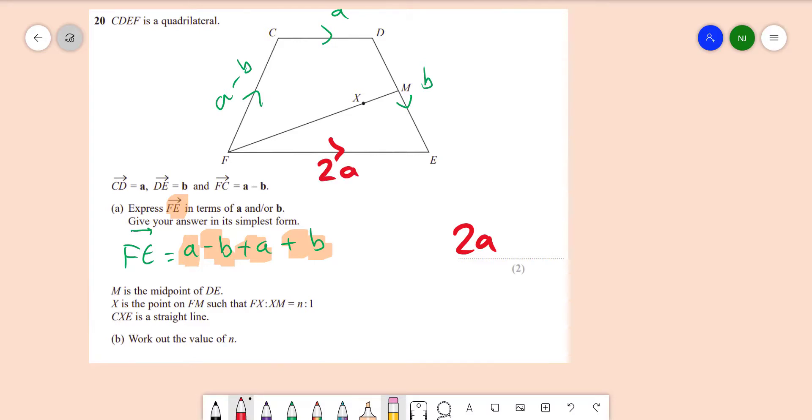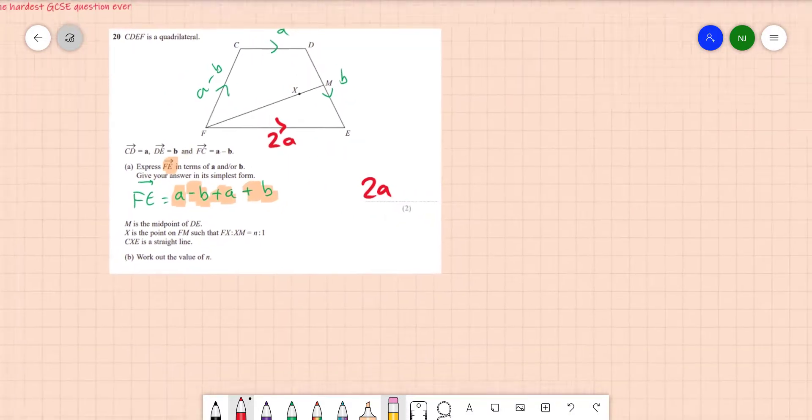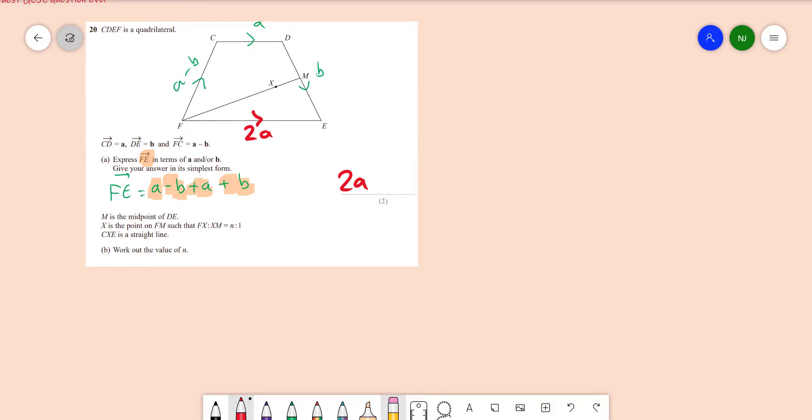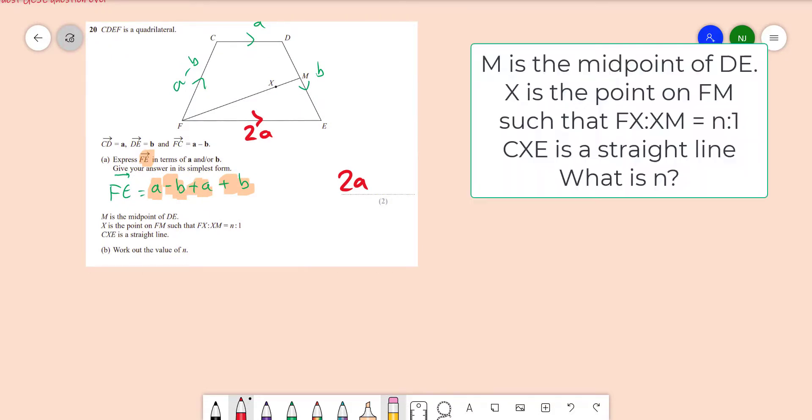Pretty simple for two marks, feeling pretty confident and then we get to the absolute monster of a question. M is the midpoint of DE. X is the point on FM, so that's this point here such that FX to XM is something to 1. So we have a ratio of FX to XM and we get told that CXE, so let's draw that in. CXE is a straight line. This is a straight line. Work out the value of N.